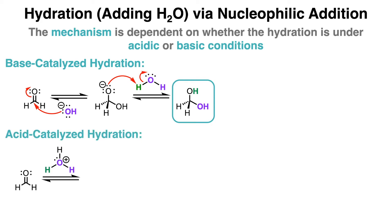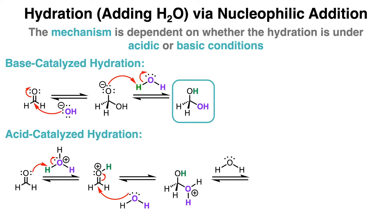The mechanism for acid-catalyzed hydration is slightly different. It starts with one of the lone pairs on oxygen in the carbonyl getting protonated by the acid, which forms a positively charged intermediate. Then water attacks the electrophilic center, and the carbonyl pi bond breaks to form a new lone pair on oxygen. Then a second mole of water comes in to deprotonate one of the extra hydrogen atoms, which then forms the final hydrate product.